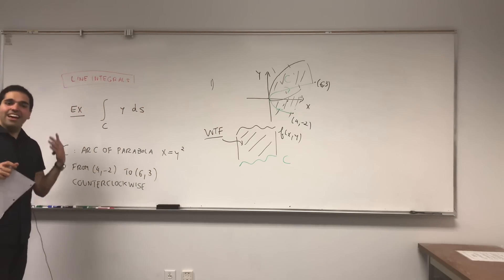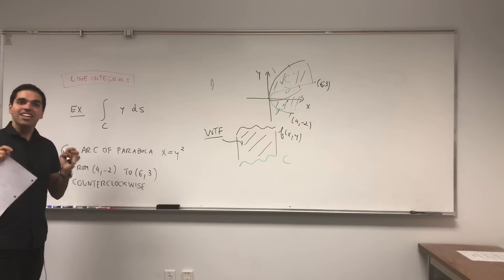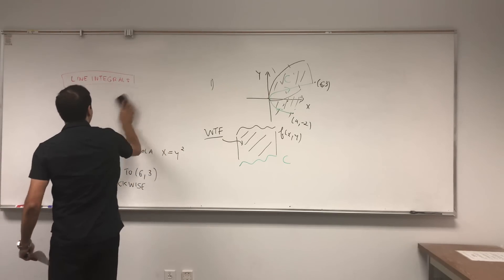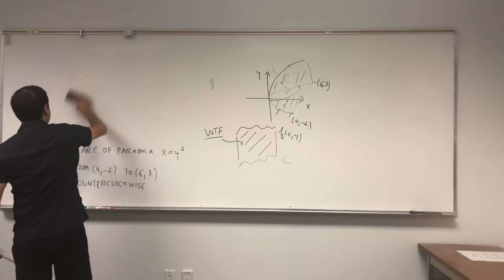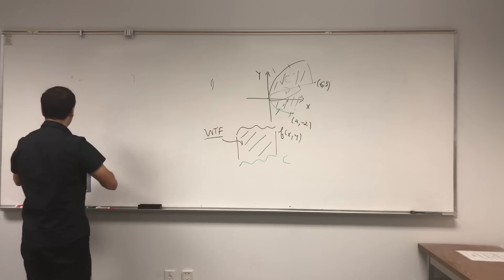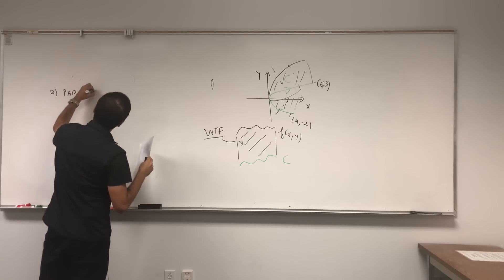And you're basically calculating the area under that fence. And how do we do this? Just as usual in those vector calculus questions, you need a parametrization. So first, let's parametrize that curve C.